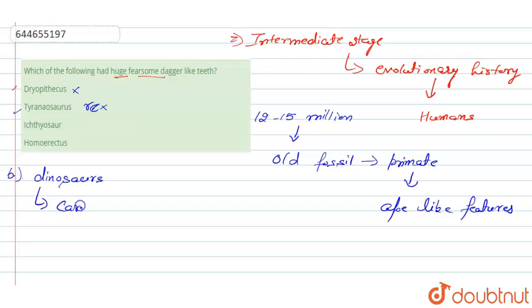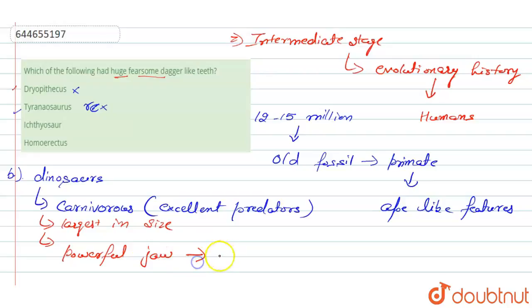Carnivores, and due to this, they are excellent predators. Excellent predators, as well as they are largest in size or they are known for their powerful jaws, powerful jaws, as well as for their fearsome or huge fearsome dagger-like teeth.